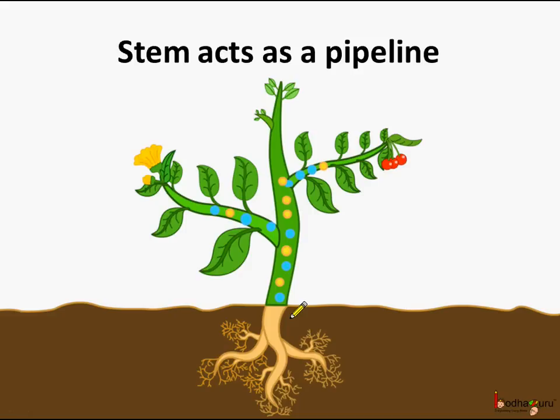That is to the leaves. And we know the leaves prepare the food. The food prepared is again conducted to the other parts of the plant through the stems. So the stem acts as a pipeline.